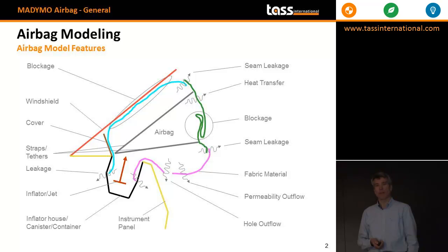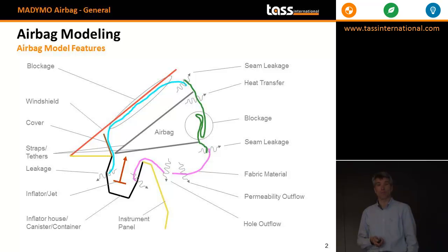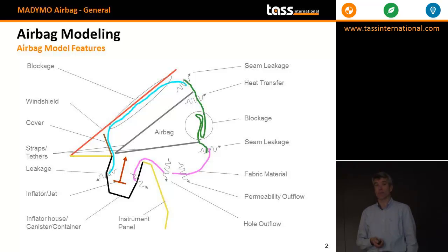Blockage — already explained with respect to the windshield. For example, it can also be to the IP, but it can also be due to self-contact if you have a fold in the airbag. The fabric material itself can have a high effect — as you will see in one of the later presentations — on the shape of the airbag. In the case of a driver airbag, you can have a seam at the stitch or not, and that depends on the way the fabric yarns are orientated.